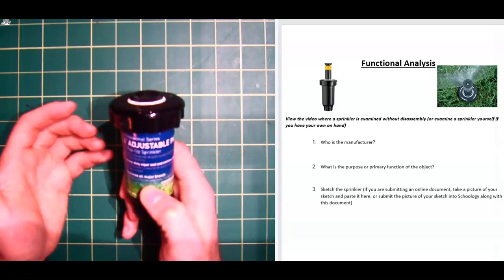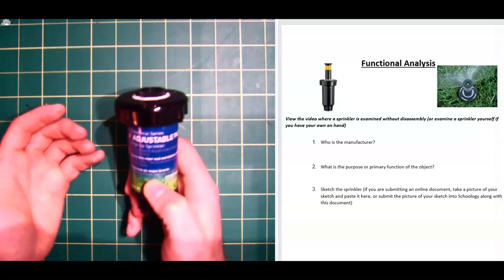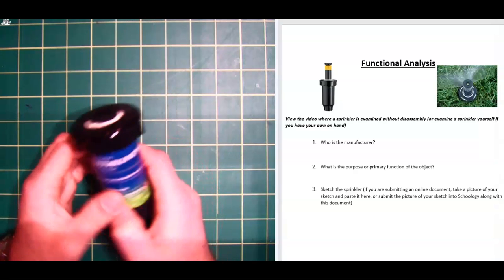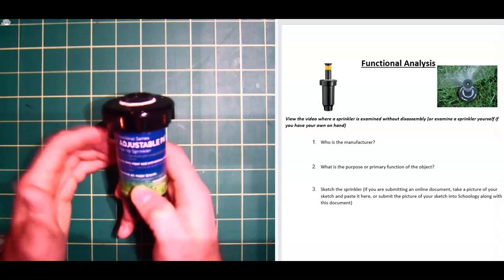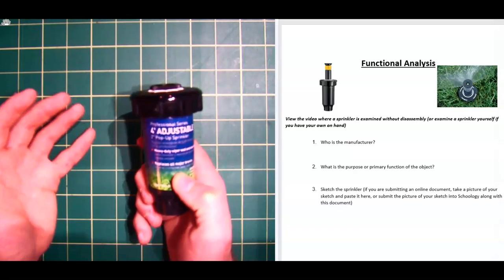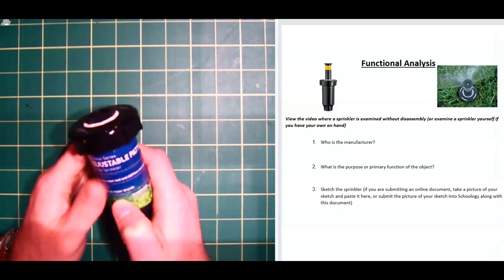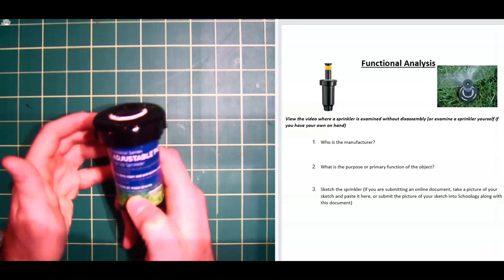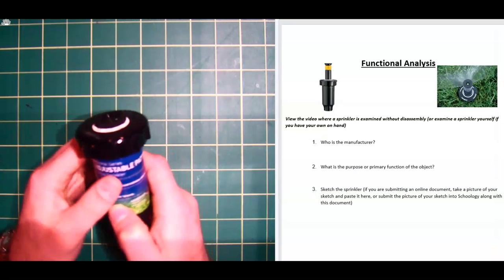And all that is, is where you look at how it works with all the parts still together. Eventually we'll take it apart and see all the individual pieces and components to this. But when you take things apart, you may accidentally break it. And so it's important to figure out how the parts all go together and document how all the parts go together and how they work together before you take it apart.